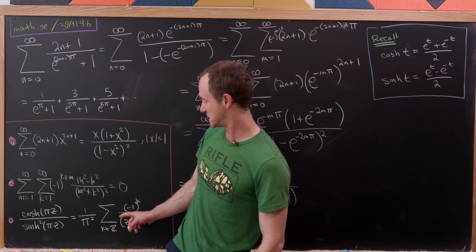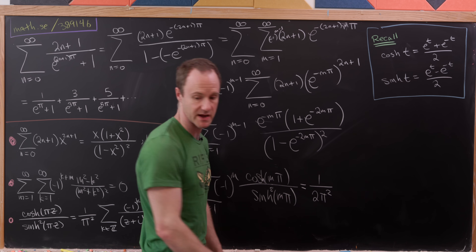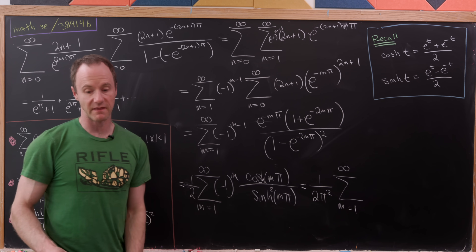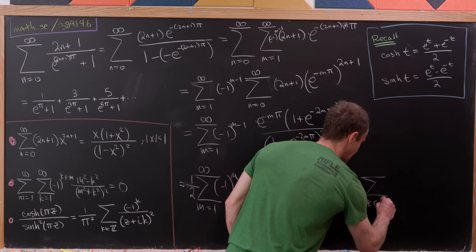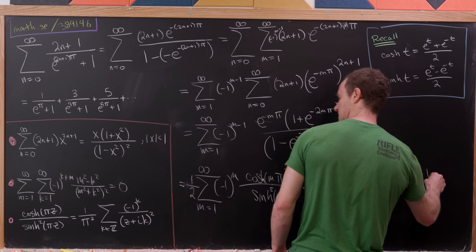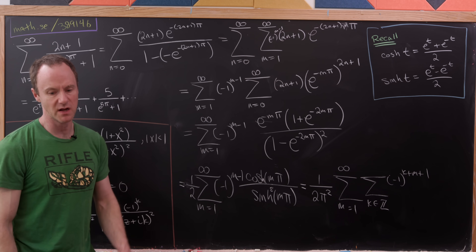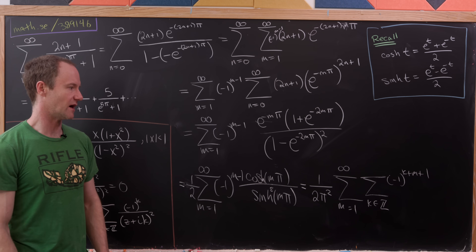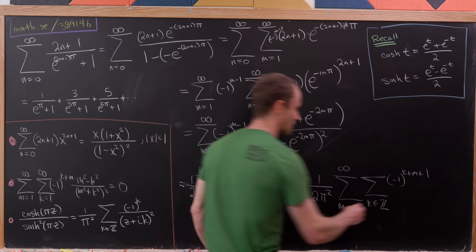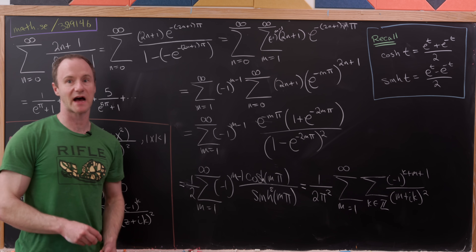Now I'll use the third formula. Observing that I can write this as (1/(2π²)) times the sum as m goes from 1 to infinity, inside of which we have the sum as k goes over all integers, of (−1)^(k+m+1) / (m + ik)². That comes from our third tool, with m−1 and m+1 giving the same value of (−1), so we can make that simple replacement.